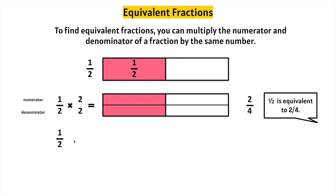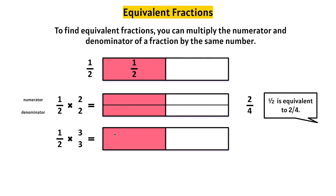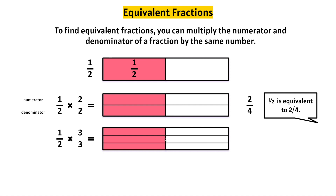One-half — let's multiply the numerator and denominator by three. Let's take a look at a model. We have a half, and let's multiply the numerator and denominator by three. One, two, three. Let's count all the equal parts: one, two, three, four, five, six. The denominator will be six.